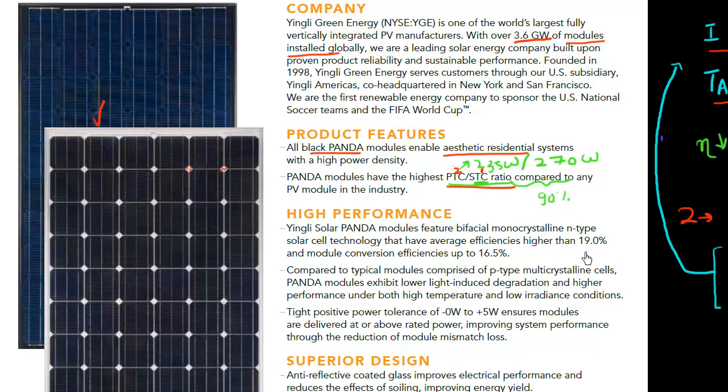Then it also says that these panels give efficiency. These cells which are used in this panel, they give an efficiency of 19%. But that's not relevant. What's relevant is the module efficiency. And that is given to be 16.5%. Again, the thing you should be asking yourself is that under what kind of test conditions is this efficiency measured.